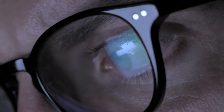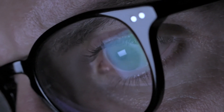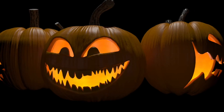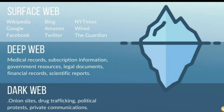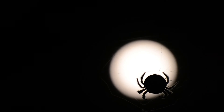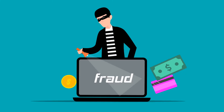The deep web and the surface web are both accessible by the public — they just require different methods to access them, like a specific password, specific browser, or login details. Now let's talk about the dark web. First, let's make it clear: the deep web is not the dark web, but the dark web is part of the deep web. It is the deeper portion of the deep web, and this dark part is intentionally made hidden. To access it you need a special browser, and either you know the exact URL or you'll need a special search engine.